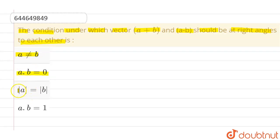a dot b equals to zero, magnitude of a vector equals to magnitude of b vector, and the last option is dot product of a vector dot b vector is equals to one.